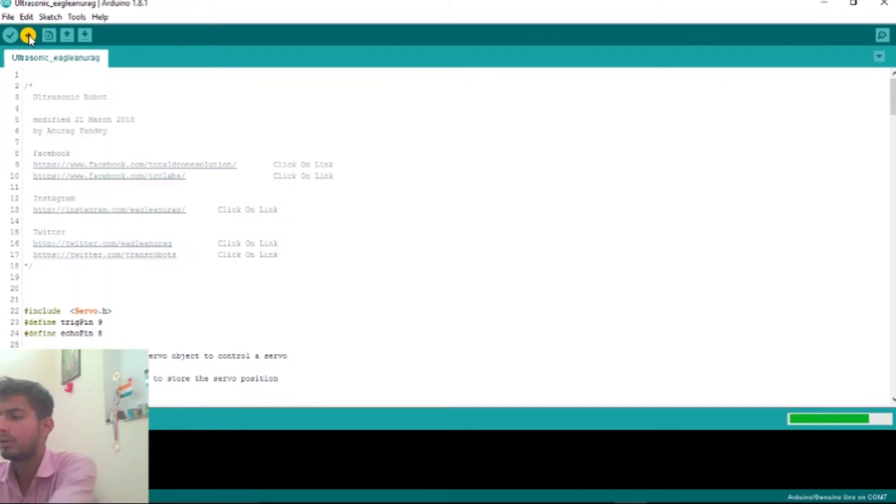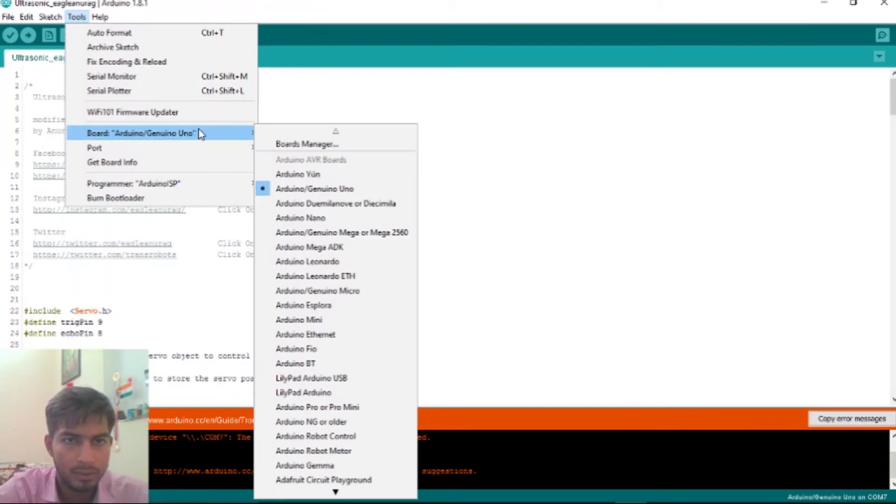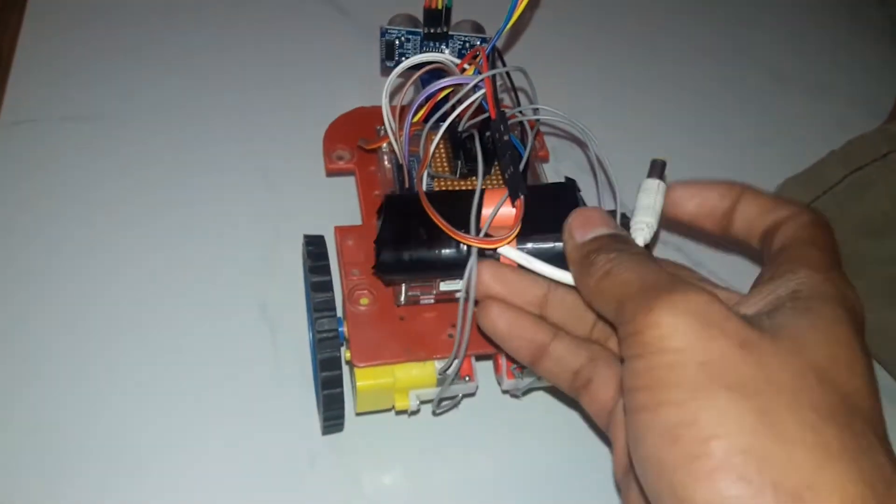Just click on upload. See the microcontroller. Oops, what is this? We have to select the Arduino UNO, then port. Click to upload, upload done. Check the microcontroller now, let's test it.